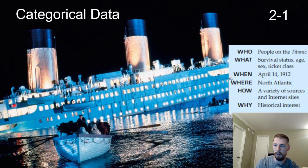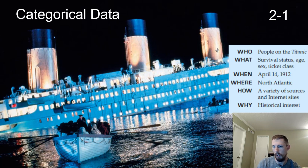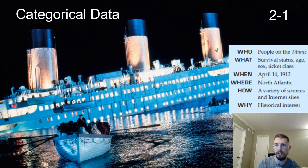We're looking at the people on the Titanic — their survival status, age, sex, and ticket class: first class, second class, third class, or crew members. This is from April 14th, 1912, in the North Atlantic. We're looking at records from a variety of internet sources, similar to what we did with Tour de France. The reason is historical interest — just analyzing the data and seeing the story it tells. We'll also revisit this data at the end of the unit to talk about independence and whether the categorical data is independent.